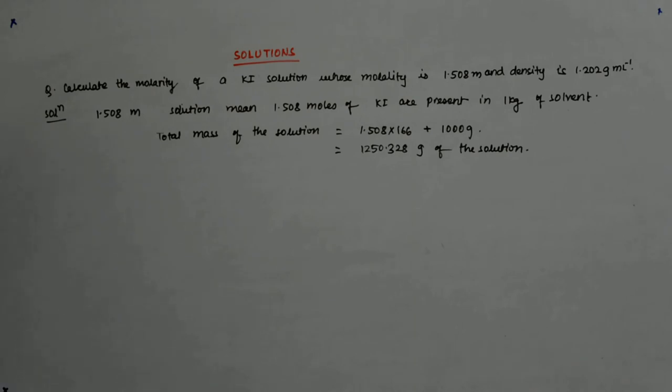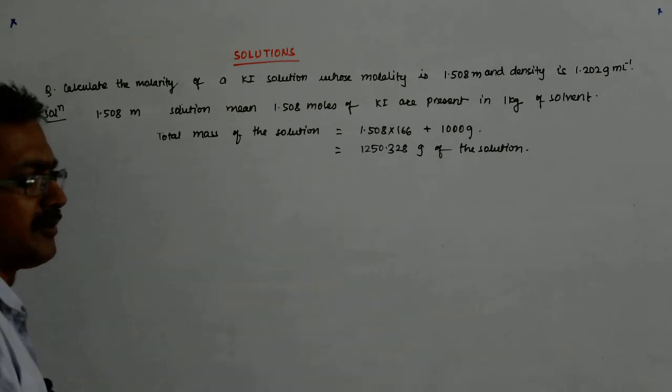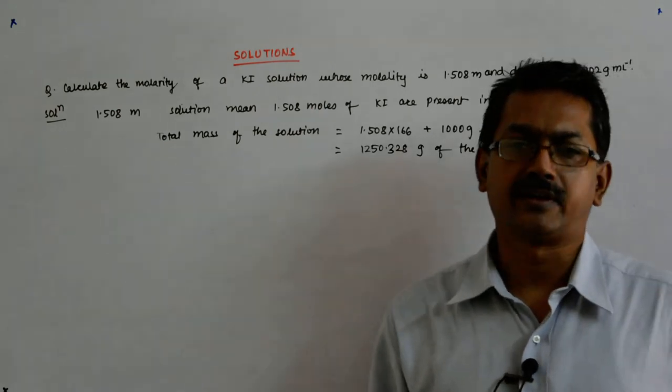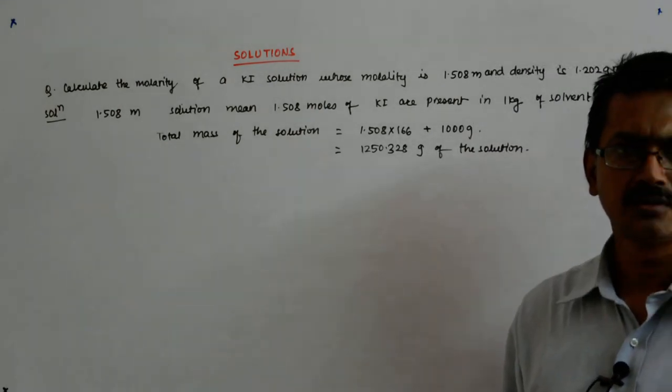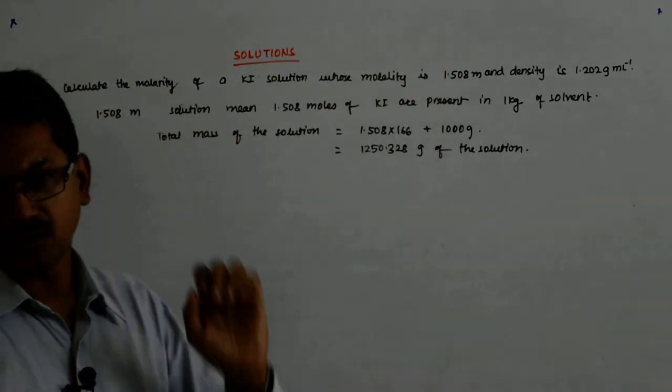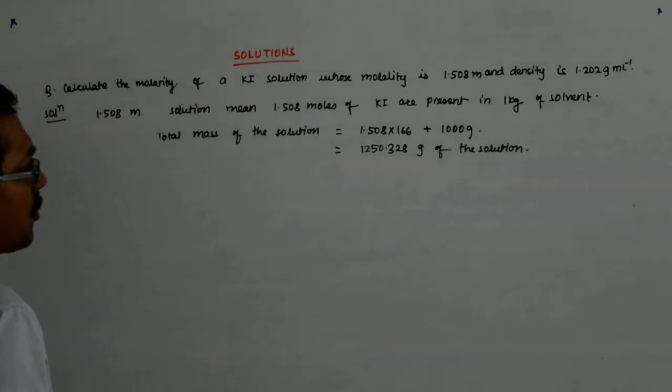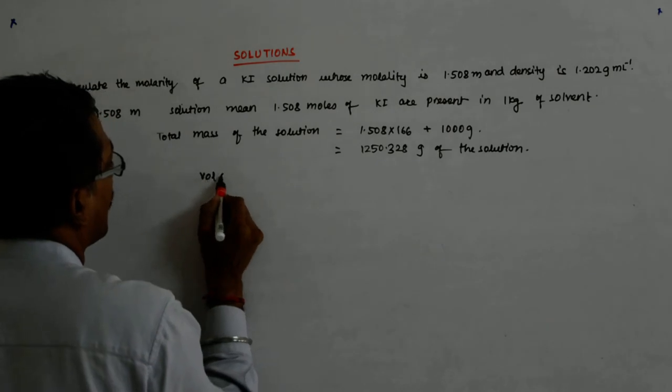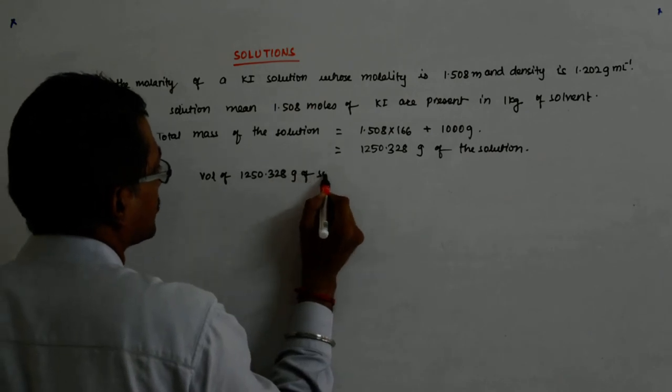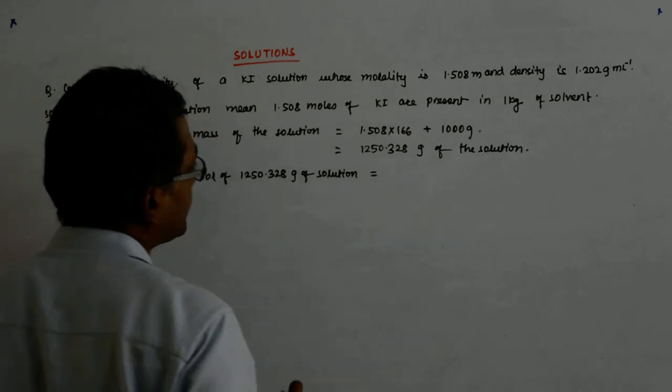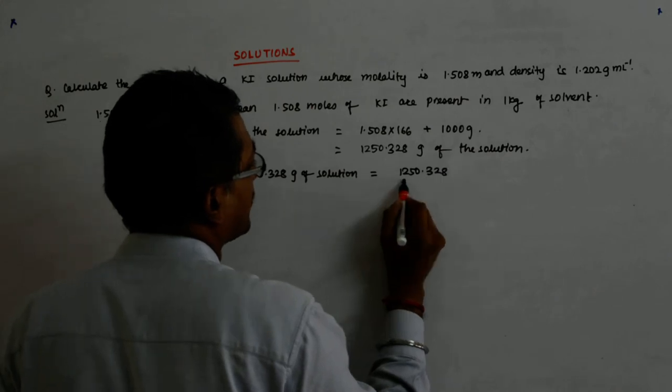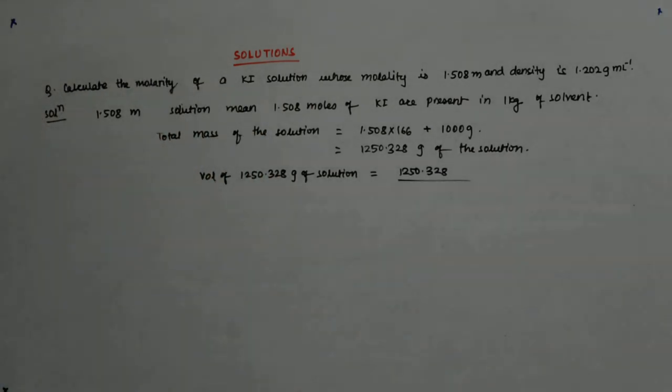Now, what is the volume of it? That can be found out. Now this much gram of solution has got 1.508 moles of solute. So, what is the volume of this? Volume of 1250.328 grams of solution is equal to mass upon density. Density is 1.202 grams per liter.